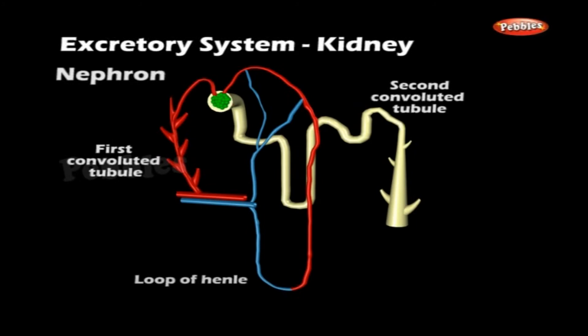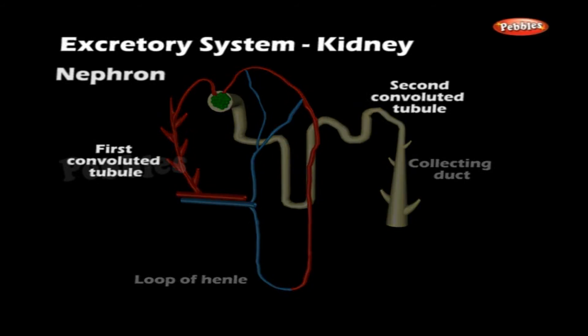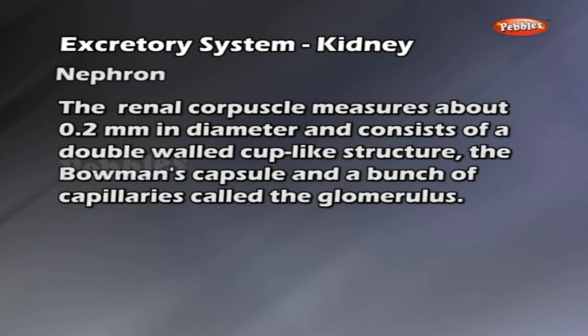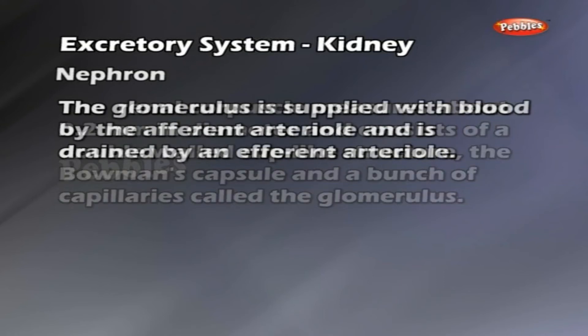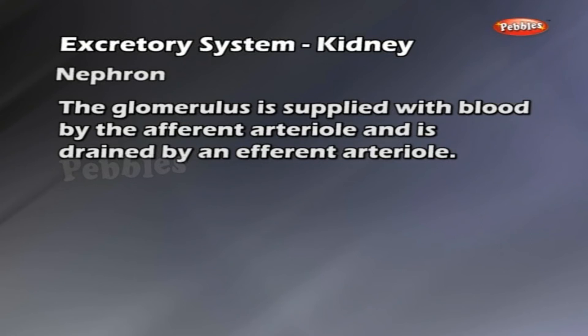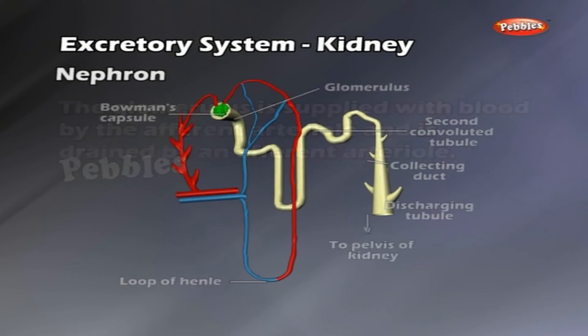The distal convoluted tubule opens into a collecting duct. The collecting duct and loop of Henle lie in the medulla, while other parts lie in the cortex. The renal corpuscle measures about 0.2 mm in diameter and consists of a double-walled cup-like structure called the Bowman's capsule and a bunch of capillaries called the glomerulus. The glomerulus is supplied with blood by the afferent arteriole and is drained by an efferent arteriole. The cavity of the Bowman's capsule opens into the proximal convoluted tubule.